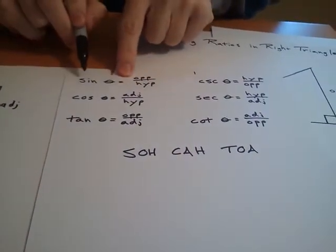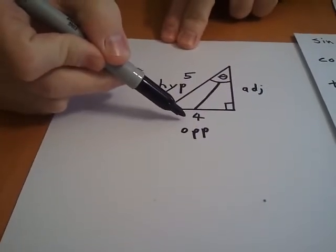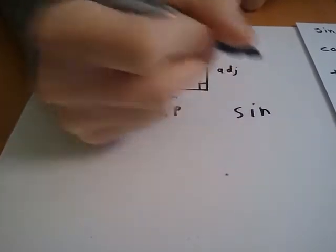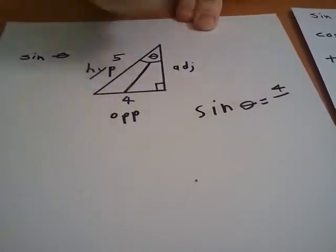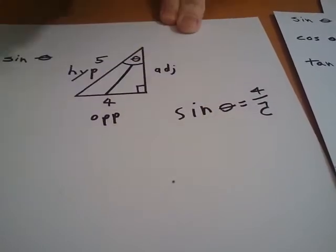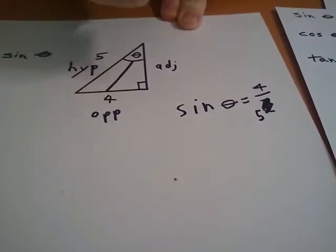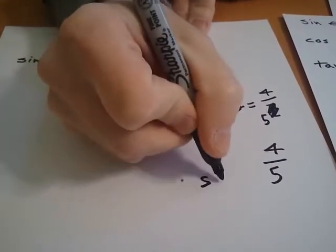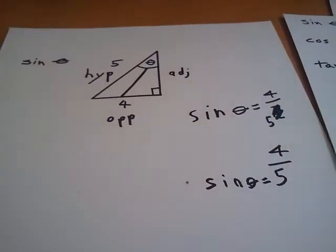Sine, we look back to SOH CAH TOA, or we look back to our chart, is opposite over hypotenuse. And how about that? I know my opposite is 4, and I know my hypotenuse is 5. So this one would just be sine of theta equals opposite 4 over hypotenuse 5. That's a backwards 5. Okay, ignore that. It's like 5 right there. Right there. 4 over 5. Make it pretty. 4 over 5 is what our sine of theta equals. And we are done. That's it. That's all you need to do to find a trig ratio.